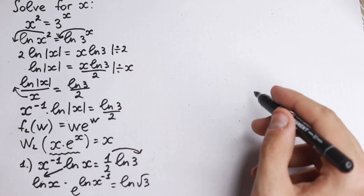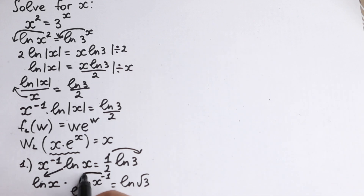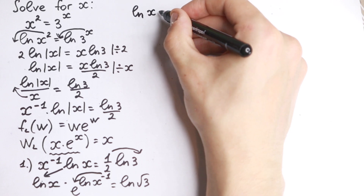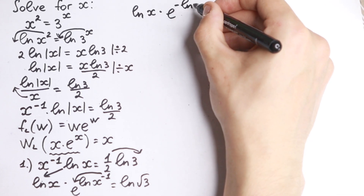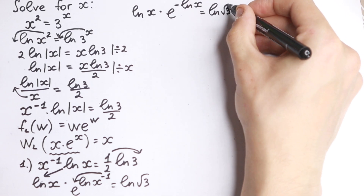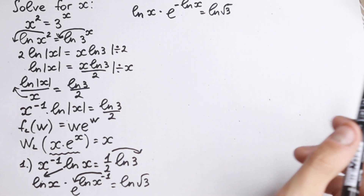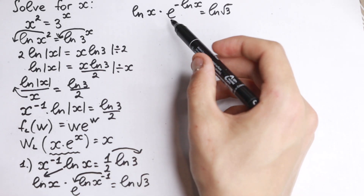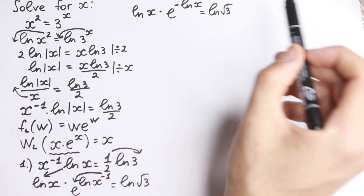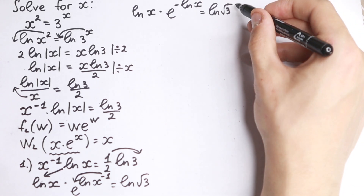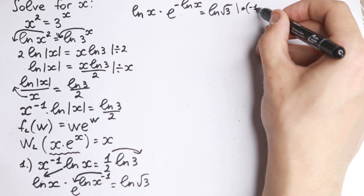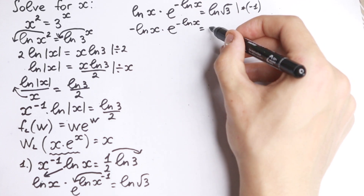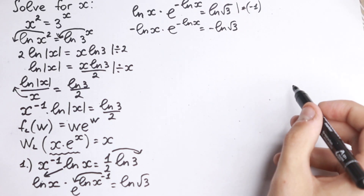So now we have natural log x times e to the power minus natural log x equal to natural log square root of 3. This looks like the Lambert W form x times e to the power x, but our exponent is minus natural log x. Since they don't match, we multiply both sides by minus 1, giving us: minus natural log x, times e to the power minus natural log x, equal to minus natural log square root of 3.